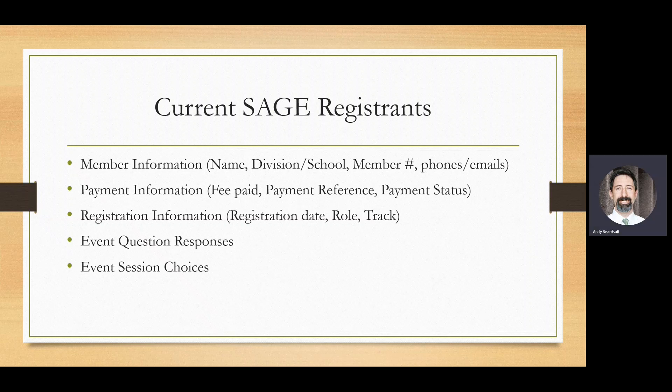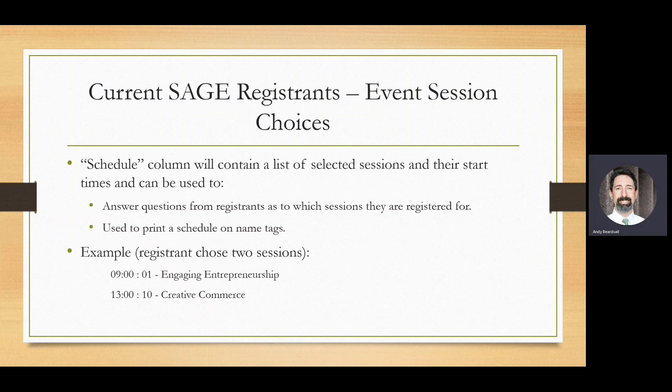You can describe the sessions available in your program, and the registrant's session choices will appear in this report as well. We have a special field called schedule, which contains a brief summary of which sessions the registrant has chosen and the times those sessions begin. This can be used to answer questions from registrants who wish to be reminded of their chosen sessions, and you can also use this field to print a schedule on name tags for your attendees.